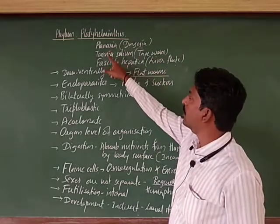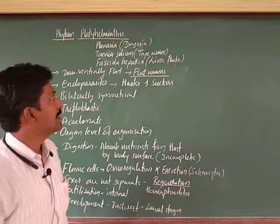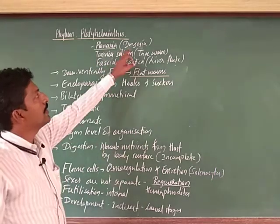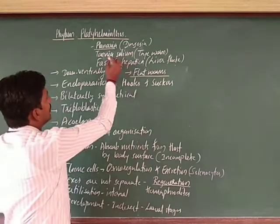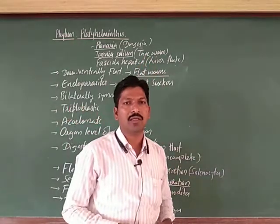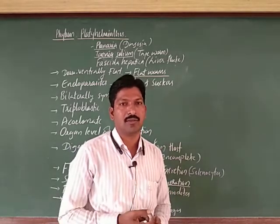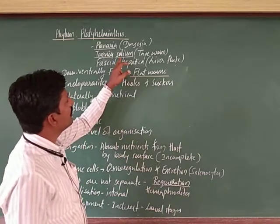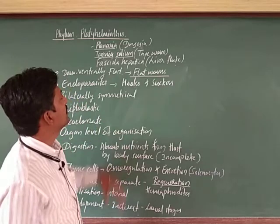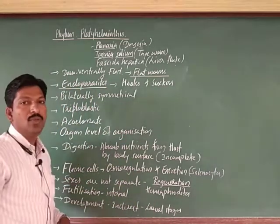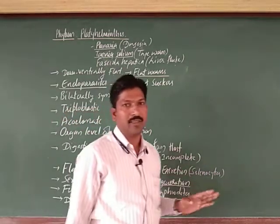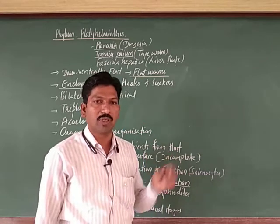Planaria is short and free-living. The examples here are: first, Planaria, also called Dugesia; second, Taenia solium, commonly called the tapeworm — its body is like an elongated tape, maybe meters in length. These animals live inside vertebrate animals, including human beings, as intestinal parasites — hence we call them endoparasites. The body shows segments, but it is not truly segmented; these units are observed as small sections in the elongated body.